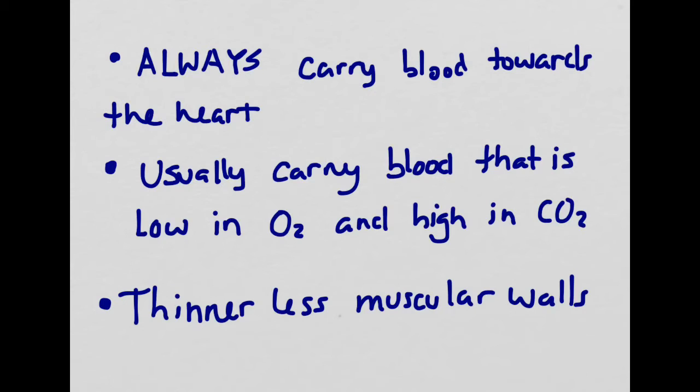Now we're going to talk a little bit about veins. The thing that's always true about veins is that they always carry blood going back towards the heart and never in the opposite direction. Just like arteries, they have a type of blood that they usually carry. Veins usually, but not always, carry blood that's low in oxygen and high in carbon dioxide. The last thing that you should know about veins is that they have thinner and less muscular walls. You can't feel a pulse in a vein.